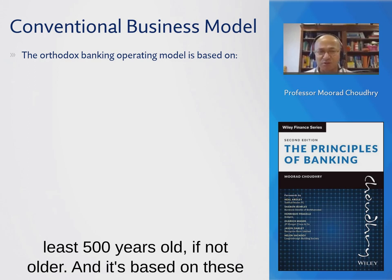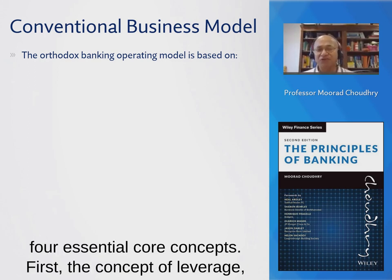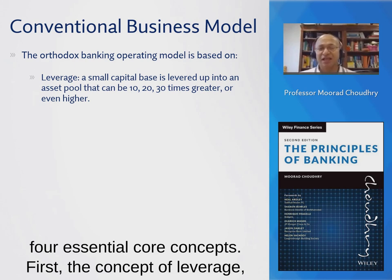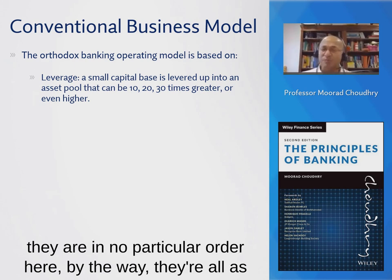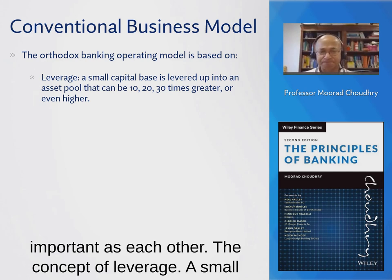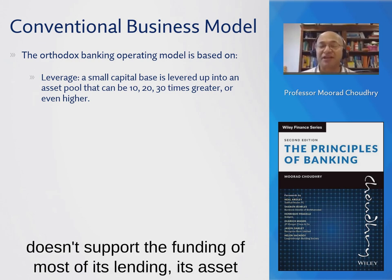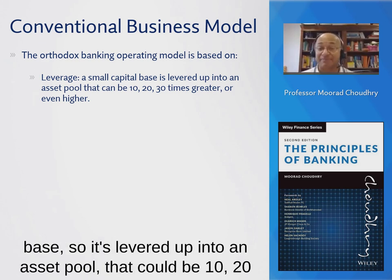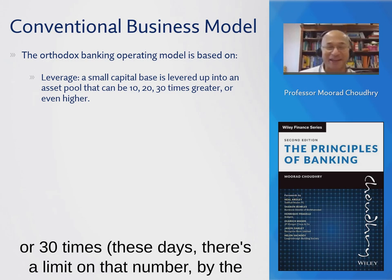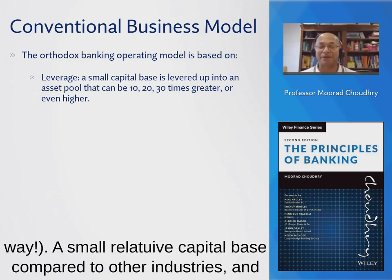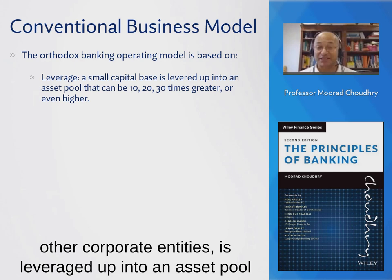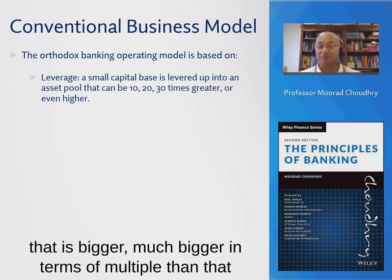The model is based on four essential core concepts — there's no particular order, they're all equally important. The first is leverage: a small capital base, in other words the institution's own funds, does not support the funding of most of its lending or asset base. So it's levered up into an asset pool that could be 10, 20, or 30 times that capital base — though there are regulatory limits on that number today.